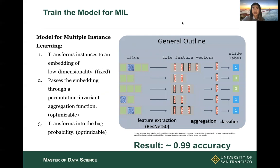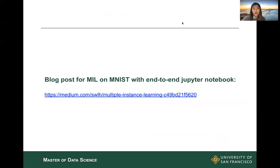The multiple instance learning model consists of the pre-training part on the left half, followed by three transformations. The first transformation represents complex data using low-dimensionality embeddings. We then pass the embedding through an aggregation function, and finally transform back into a bag probability to get the bag label. The last two transformations are optimizable so the model can learn from parameters to improve results. The result for the MNIST dataset is 99% accuracy, which is very good. I've also posted a blog post for MIL on MNIST with an end-to-end Colab notebook on Medium — please check it out if you're interested.